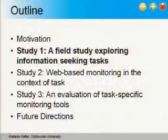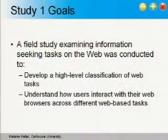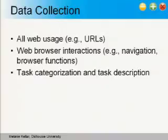The first study we conducted was a field study to explore information-seeking tasks on the web. The goals were to develop a high-level classification of web information tasks — building on and updating previous research, much of which had been conducted in the late 90s or early 2000s — and to understand how users interact with their web browsers across different web-based tasks. We wanted to collect all URLs visited, web browser interactions such as bookmark use and back button clicks, and task information including a categorization and description.